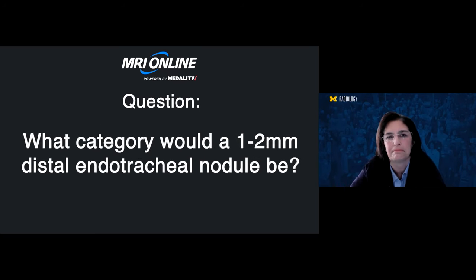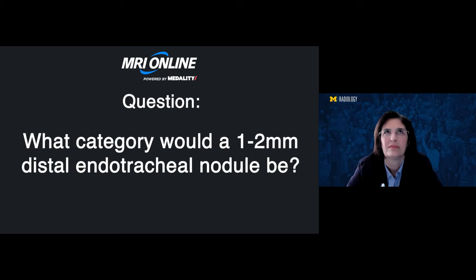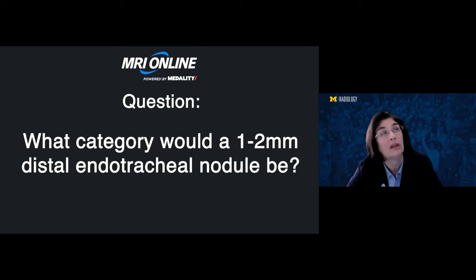Another category question from the chat: what category would a one-to-two millimeter distal endotracheal nodule be? If it's one to two millimeters and it doesn't have any air bubbles in it, it would be category two because it's small by size.